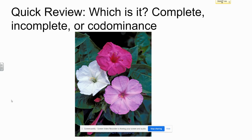Which is it? Complete, incomplete, or co-dominance? This is an example of incomplete dominance. How do we know? We have three petal colors, and we have one petal color that is in between the two pure colors.